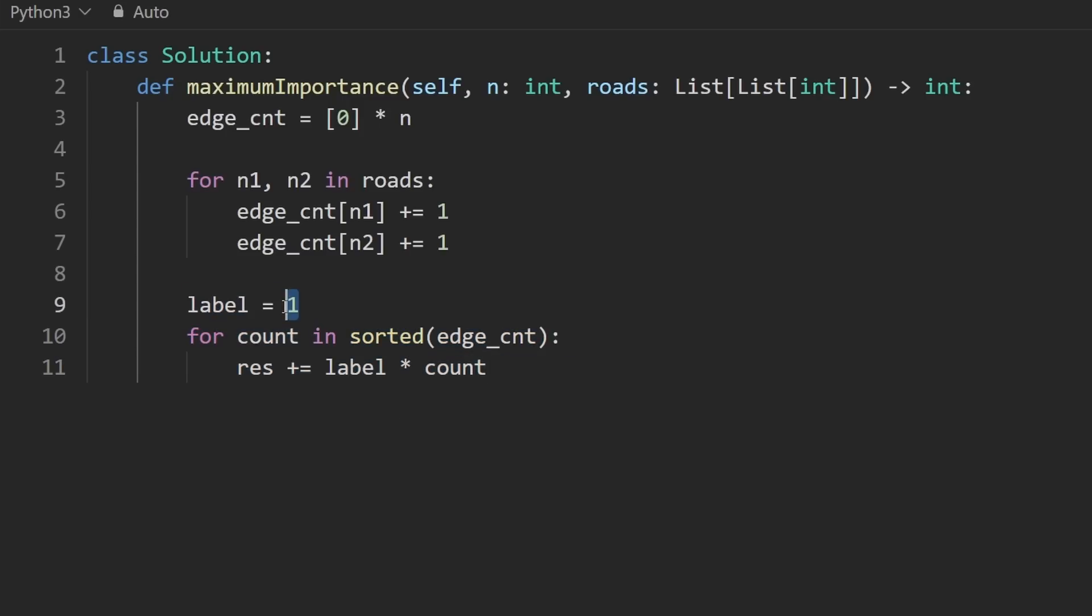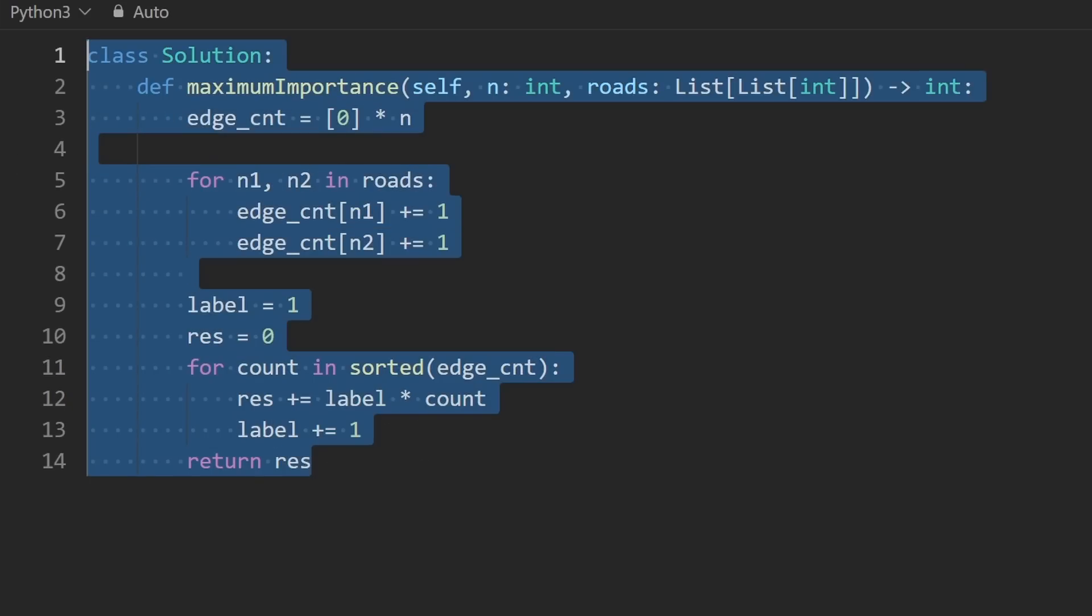Now, we should probably declare the result before we start to use it. So let me go ahead and do that. And let's go ahead and return the result as well. Now, there's just one last thing, our label. We want to increment it by one each time. Since we're going through these in sorted order, we can't really do that in the for loop. So down here, I'm just going to increment label by one. So not a lot of code here. That's usually the case with greedy solutions. As you can see on the left, it works and it's pretty efficient.